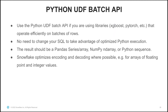You may want to use the Python UDF batch API if you are using libraries such as XGBoost or PyTorch that operate efficiently on batches of rows. There is no need to change your SQL to take advantage of the optimized Python execution — you can do it entirely in your Python code. When you use the batch API, the result of your UDF should be a pandas Series or array, a NumPy ndarray, or a Python sequence. We optimize encoding and decoding where possible, such as for arrays of floating point and integer values.